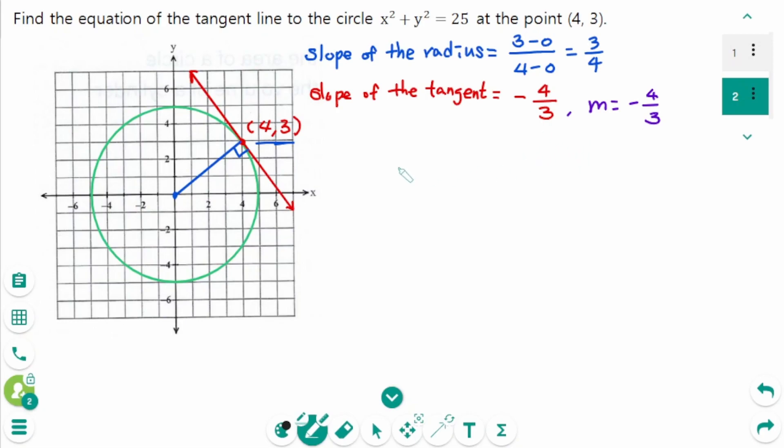Then the tangent line is y equals minus 4 over 3x plus b. The line passes through the point (4,3). Then 3 equals minus 4 over 3 times 4 plus b. Then 3 equals minus 16 over 3 plus b.